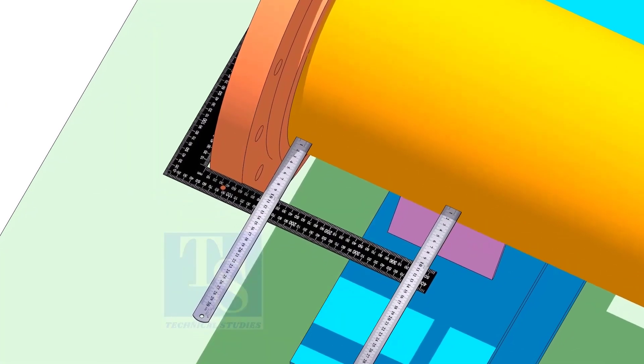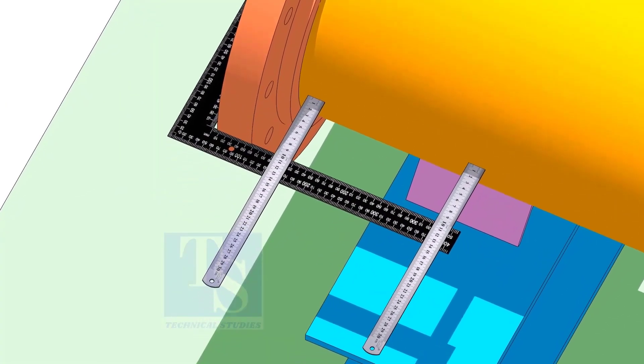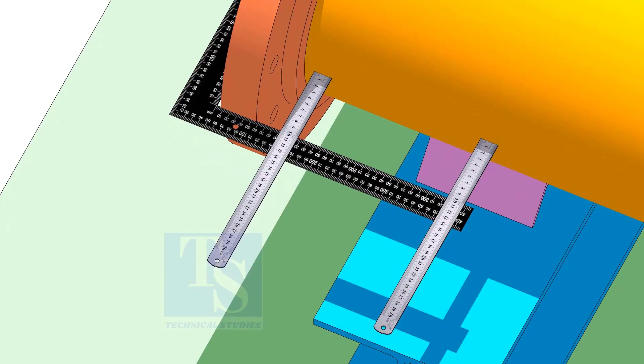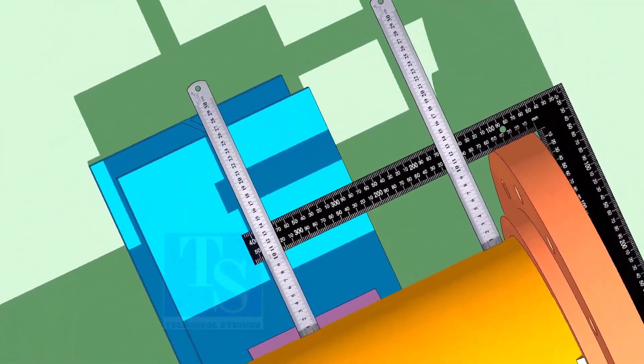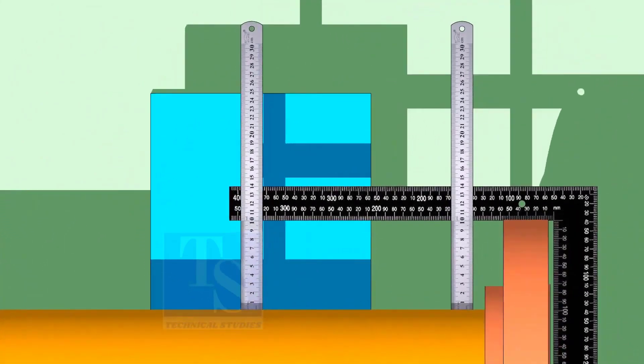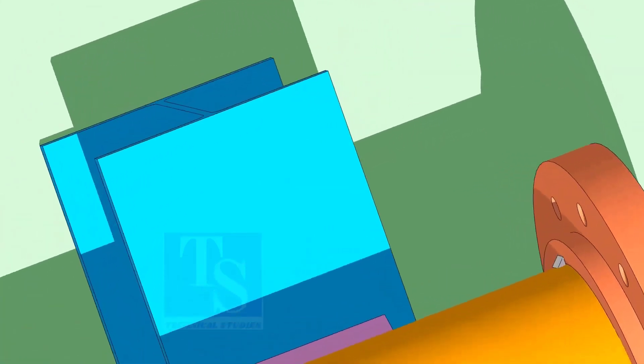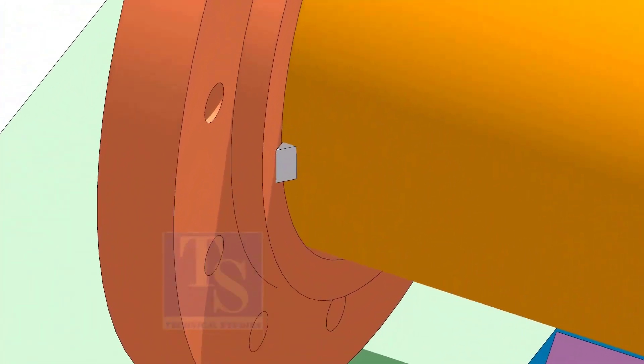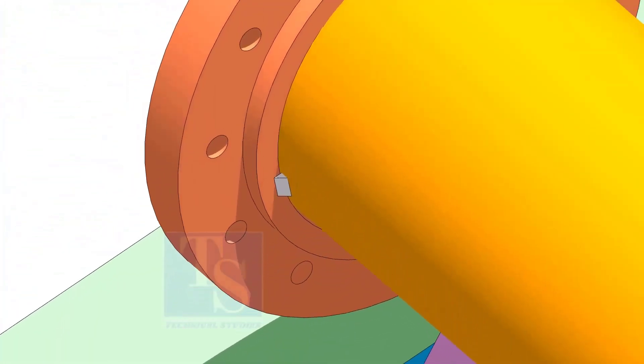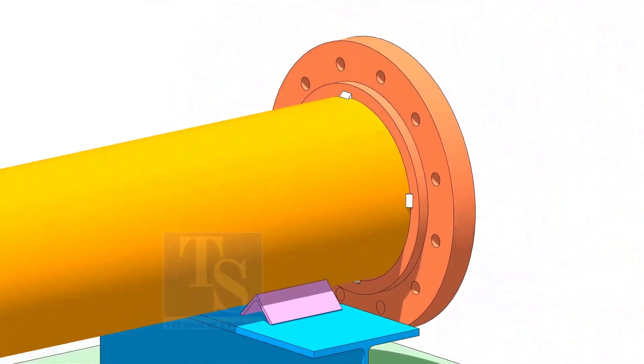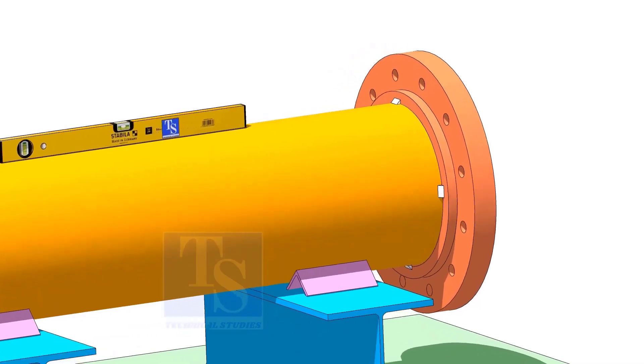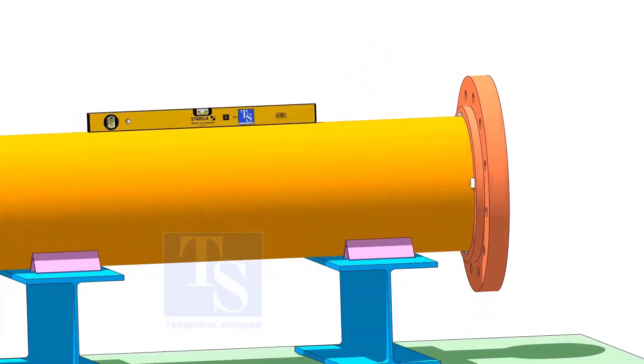Now, correct the squareness on the side and tack weld on both sides. After tacking the flange, correct the level of the pipe.